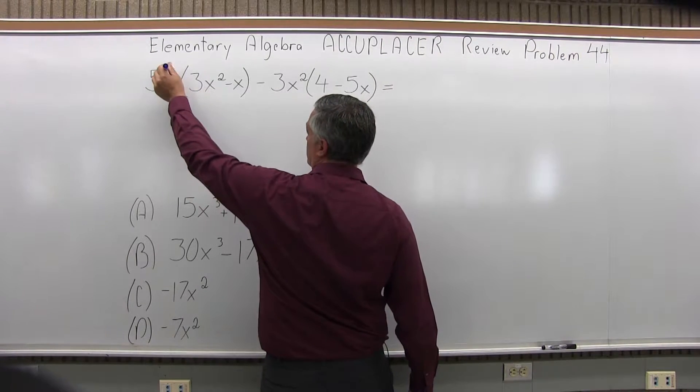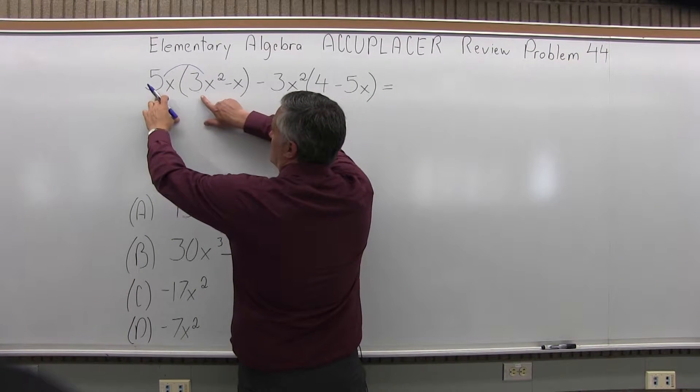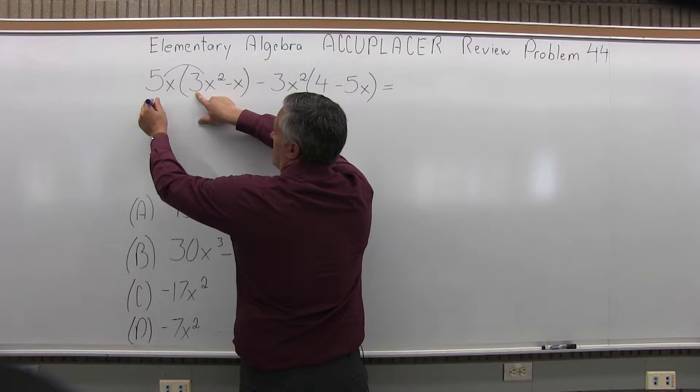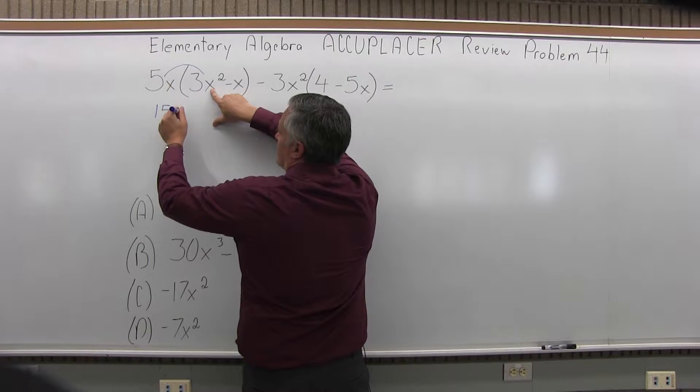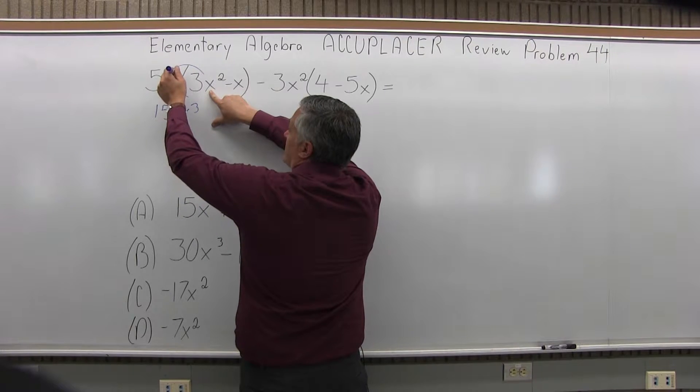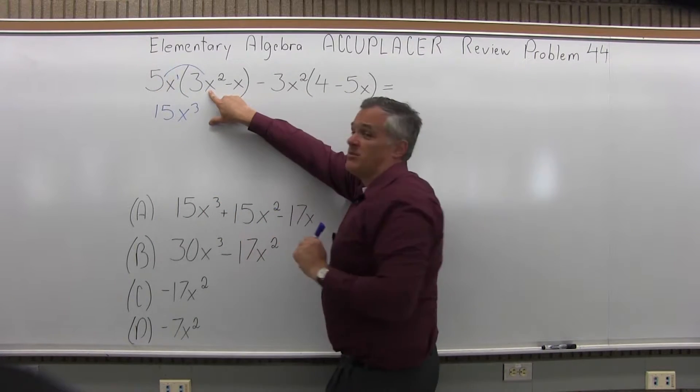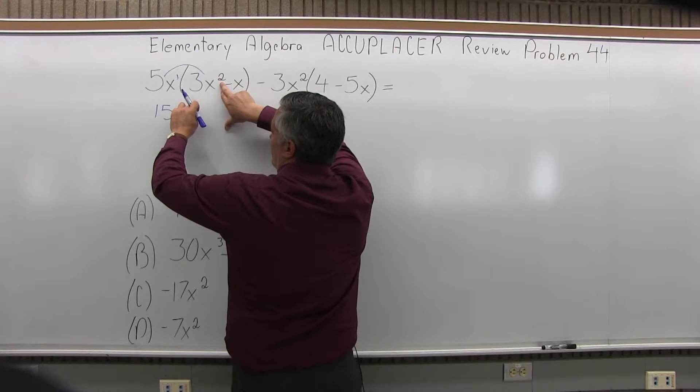So for the first set of parentheses, it'll start with 5x times 3x squared. So first, I'll just focus on the 5 times 3, and that'll be a 15. Then I will consider the x times x to the second. That's going to give me an x to the third. Again, the 5x in front of the parentheses doesn't really have an exponent, but you can assume it's an x to the first. So I added 1 plus 2 for a third power.